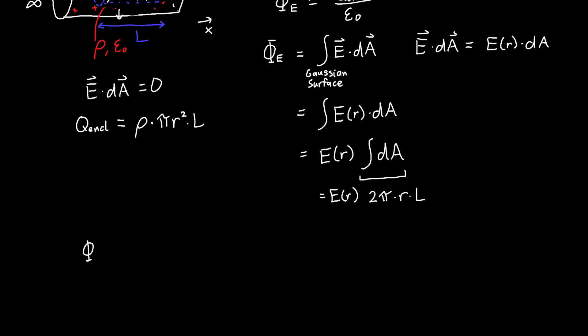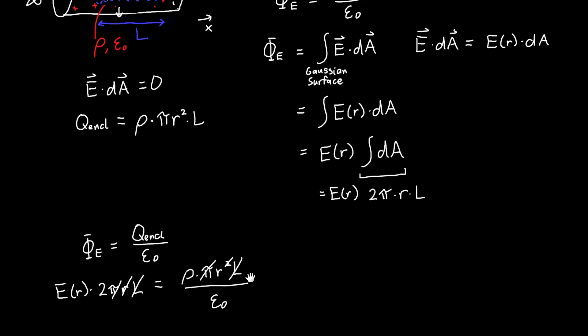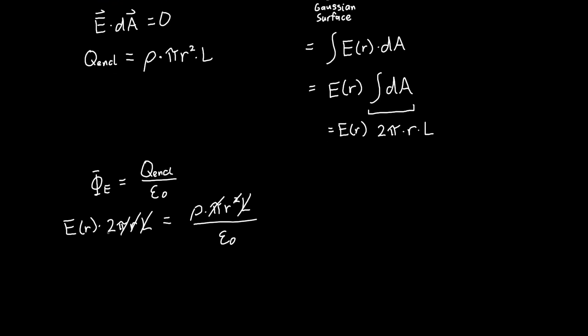So now we just need to set the flux equal to the charge enclosed over epsilon naught. And so we get E as an unknown function of r times 2π r L is equal to our charge enclosed, which is rho times π r² L divided by epsilon naught. And so the π's cancel, one of the r's cancels with this r, and thank goodness the L cancels—I was a little worried about that—and we have a 2, let's divide both sides by 2, so one-half over here.